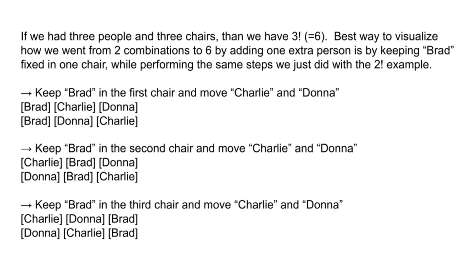If we had 3 people and 3 chairs, then we have 3 factorial, which is equal to 6. The best way to visualize how we went from 2 combinations to 6 by adding 1 extra person is by keeping Brad fixed in 1 chair while repeating the 2 factorial steps. With Brad in chair 1, we move Charlie and Donna between chairs 2 and 3 for 2 combinations. Moving Brad to chair 2 gives another 2, and Brad in chair 3 gives another 2 — for a total of 6.